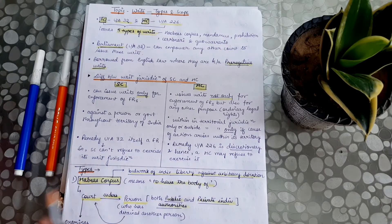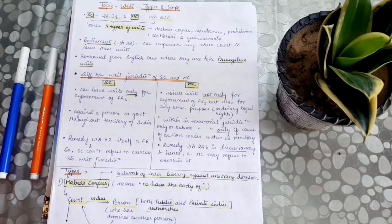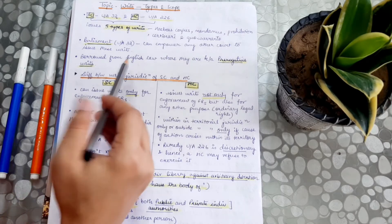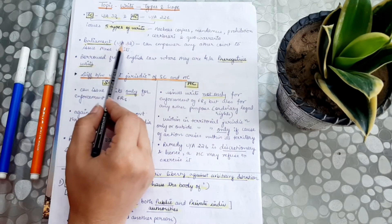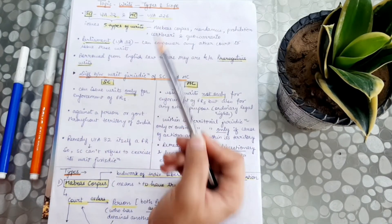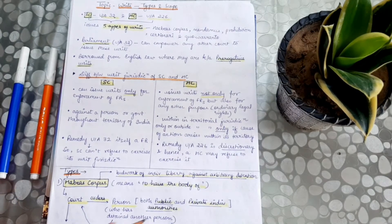Before proceeding, we should know one thing. Presently, the Supreme Court and High Court can issue writs — they have writ jurisdiction. District courts or lower and subordinate courts don't have writ jurisdiction. But if Parliament wants to empower them in the future, under Article 32, Parliament can empower any other court to issue these writs as well. But presently, only the Supreme Court and High Court have writ jurisdiction.